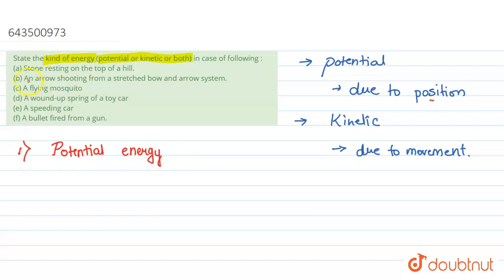Second one: an arrow shooting from a stretched bow and arrow system. Here we have to check two things. First, when the arrow is stretched, that's where position comes in. Second, when it is released and the arrow moves to the target, that is due to movement. So the answer in the second one will be both the energies.